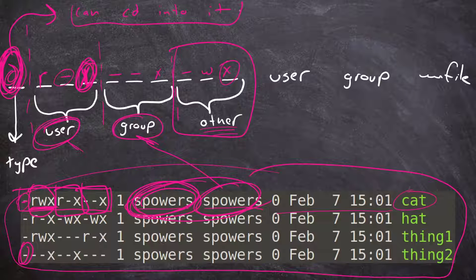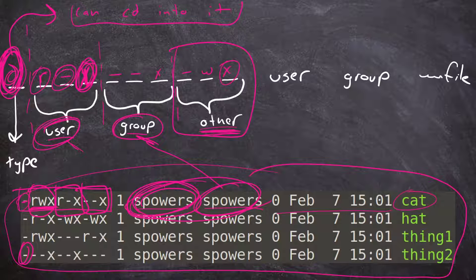You determine what you can and can't do to a file based on three things: the user's permission, the group's permission, and everybody else's permission. Reading means you can or can't see the contents. Write means you can or can't write to it. And execute — it's either executable like a program if it's a file, or you can 'cd' into it if it's a directory.